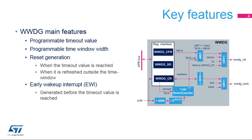As shown in the figure, the window watchdog uses the APB clock, called P-Clock, as the reference clock for its time base. The P-Clock is provided by the RCC block. This clock is divided by 4096 and by a value programmed by the application. The application can also program the reload value of the down counter using bits T. The window width is controlled by bits W.